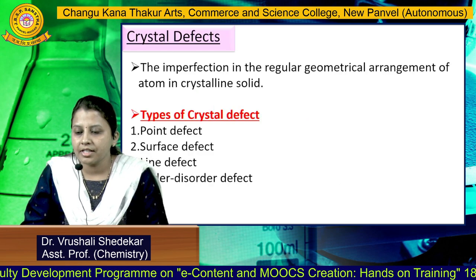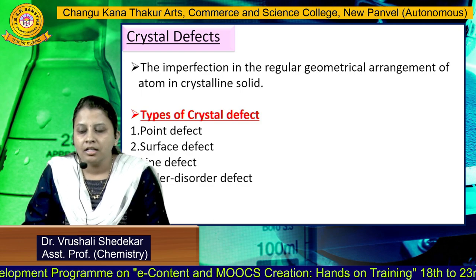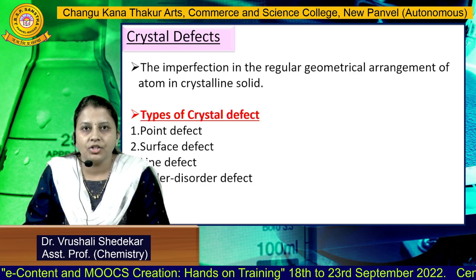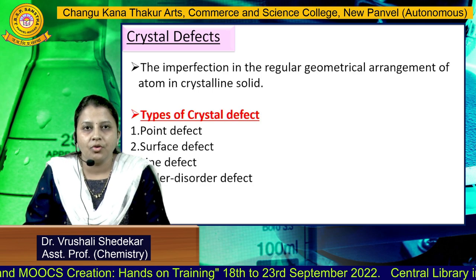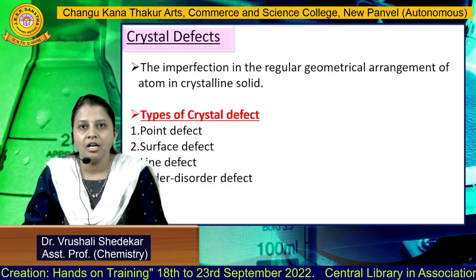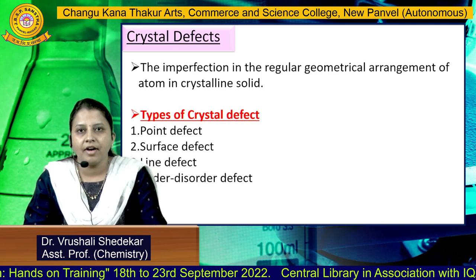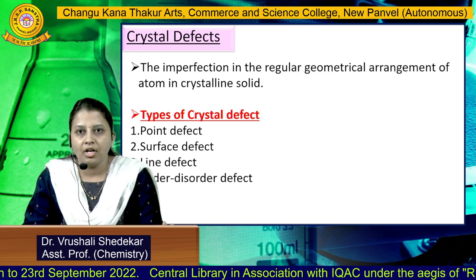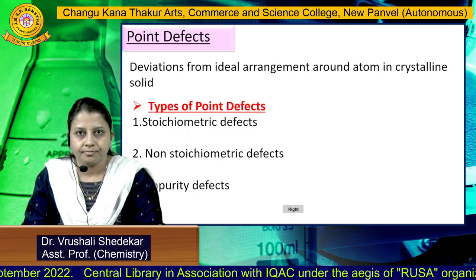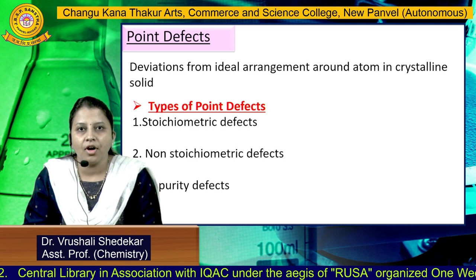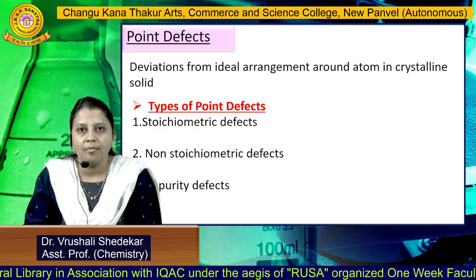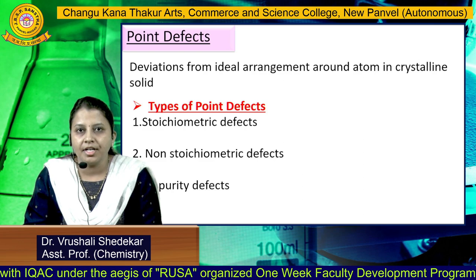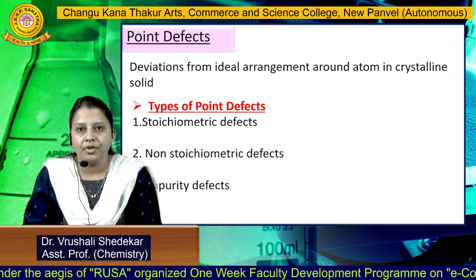Next, we will discuss crystal defects. An imperfection in the regular geometrical arrangement of atoms in a crystal solid is called a defect. Defects appear due to the formation of the material or with rising temperature. Crystal defects are divided into four types: point defects, surface defects, line defects, and order-disorder defects. Today we will discuss point defects. A point defect is a deviation from the ideal arrangement around an atom in a crystal solid, and it is divided into three types: stoichiometric defect, non-stoichiometric defect, and impurity defect.